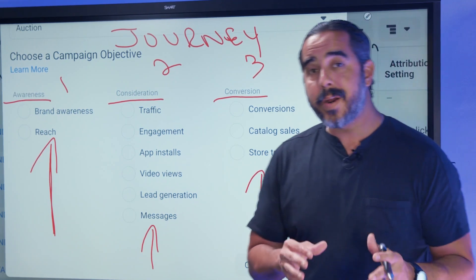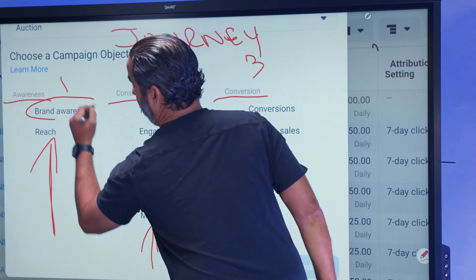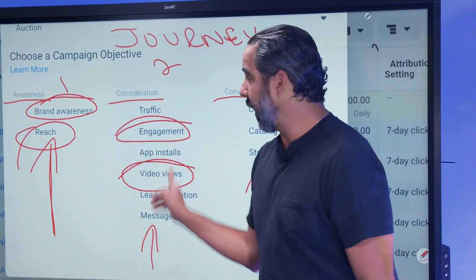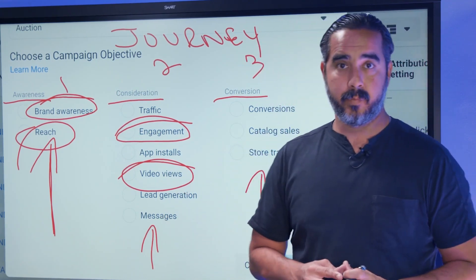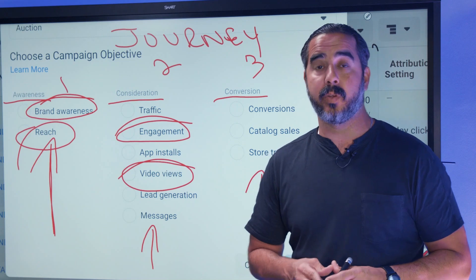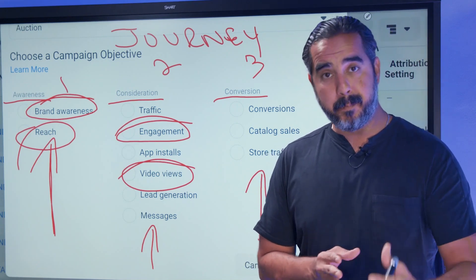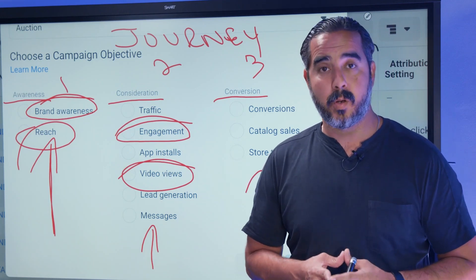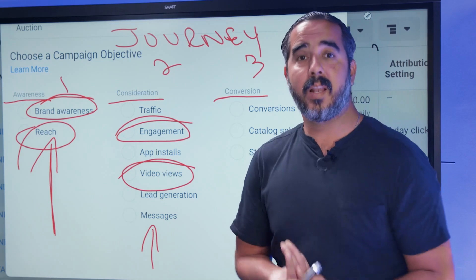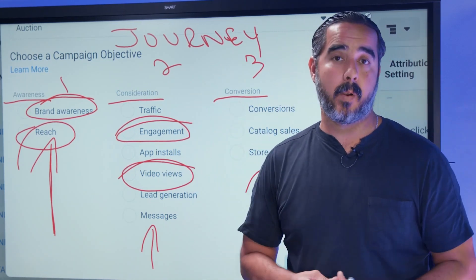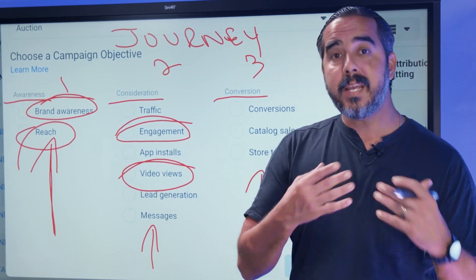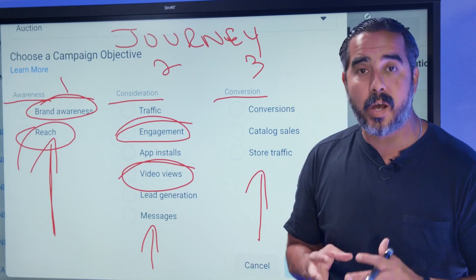I would look at awareness objectives as: brand awareness, reach, video views, and even engagement. These four objectives are really all about getting people to know you and understand your message. For example, I've been lucky enough to work with content unicorns — Dr. Eric Berg, Daymond John, Dan Henry, my father Frank Suarez, Latin American celebrities like Rudy Rodriguez. Video views are a great way to get people to know you. If they believe in you, you're investing money to get them familiar with your brand and your content.